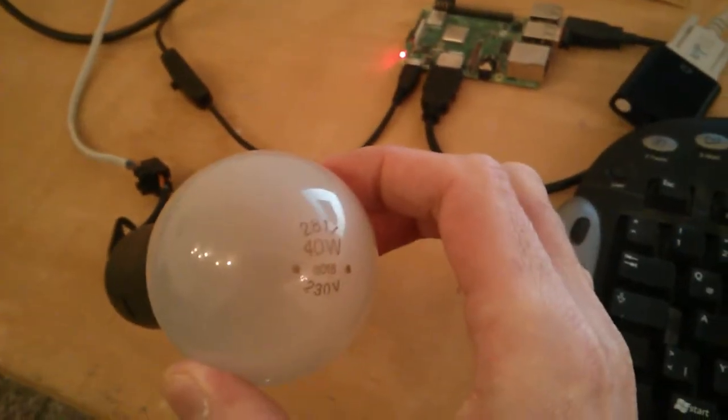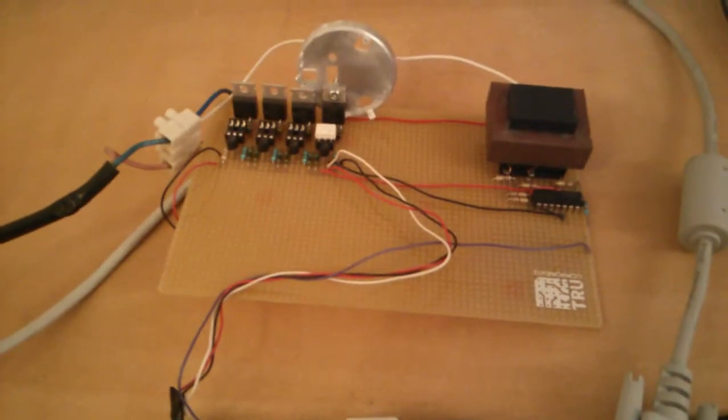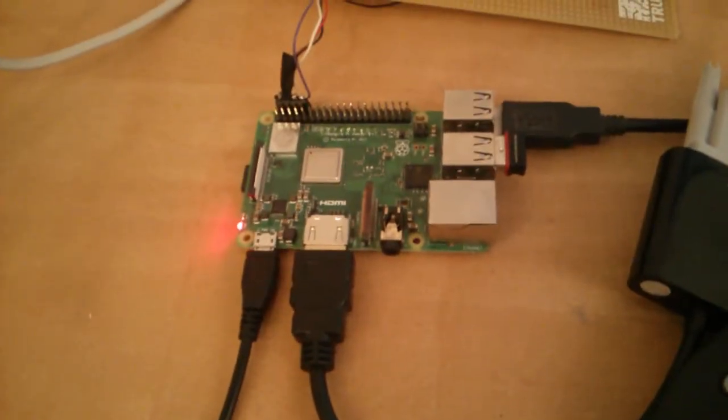So here we have a 40 watt, 230 volts light bulb. Here we have my dimmer circuit and there we have the Raspberry Pi.